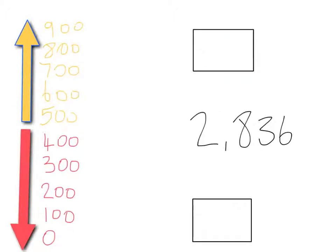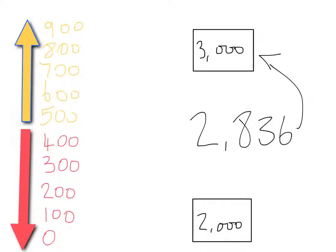We'll do the same with two thousand eight hundred and thirty-six. Its lower multiple of a thousand is two thousand and its upper multiple is three thousand. The eight hundred of two thousand eight hundred and thirty-six tells us to round upwards. So two thousand eight hundred and thirty-six rounded to the nearest multiple of a thousand is three thousand.